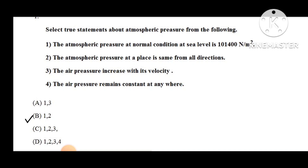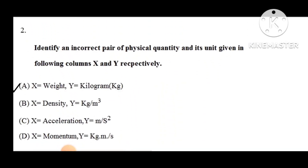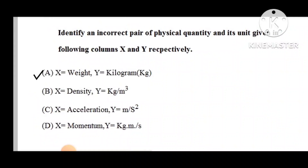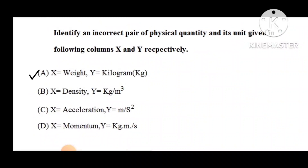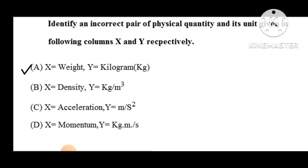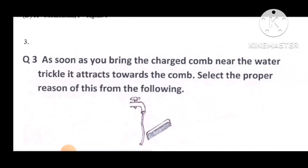Question number 2: Identify an incorrect pair of physical quantity and its unit from the following columns X and Y. Option A: X = weight, Y = kilogram (kg). Option B: X = density, Y = kg per meter cube. Option C: X = acceleration, Y = meter per second square. Option D: X = momentum, Y = kg per meter square. The correct option is A — weight paired with kilogram is incorrect.